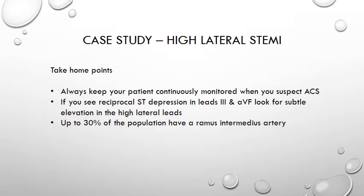Take home points from this case study: always keep your patient continuously monitored when you suspect ACS as the cause of their chest pains. If you see reciprocal ST depression in leads 3 and AVF, have a look for that subtle elevation in the high lateral leads of 1 and AVL, and don't forget that up to 30% of the population have a ramus intermedius artery.